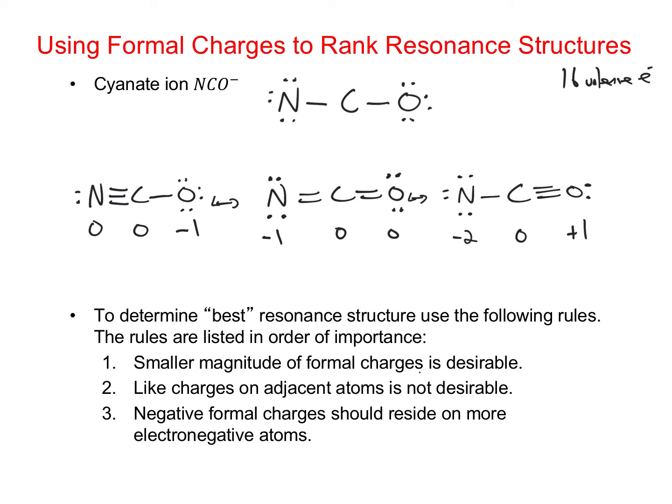The rules are listed in order of their importance. We determine the best resonance structure by following those rules, and once a rule differentiates two or more resonance structures, we can stop — we don't need to look at the other rules. The first thing to look at is the magnitude of the formal charges: we want the amount of non-zero formal charges to be as small as possible, and formal charges larger than plus or minus 1 are particularly bad. The structure on the right is clearly the worst based on rule 1 — the other two have a total formal charge magnitude of 1, whereas the right-hand one has a magnitude of 3.